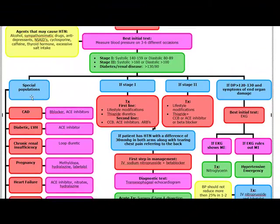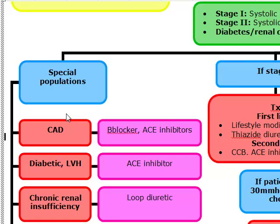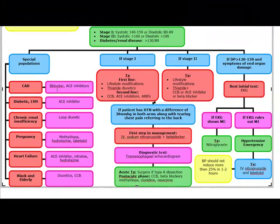For special populations with hypertension: patients with coronary artery disease can use beta blockers or ACE inhibitors. Contraindications of beta blockers include asthma, COPD, and heart block. Side effects include asthma, bradycardia, CHF, and hypertriglyceridemia. ACE inhibitors have contraindications including pregnancy and hyperkalemia, with side effects including cough, angioedema, and hyperkalemia.